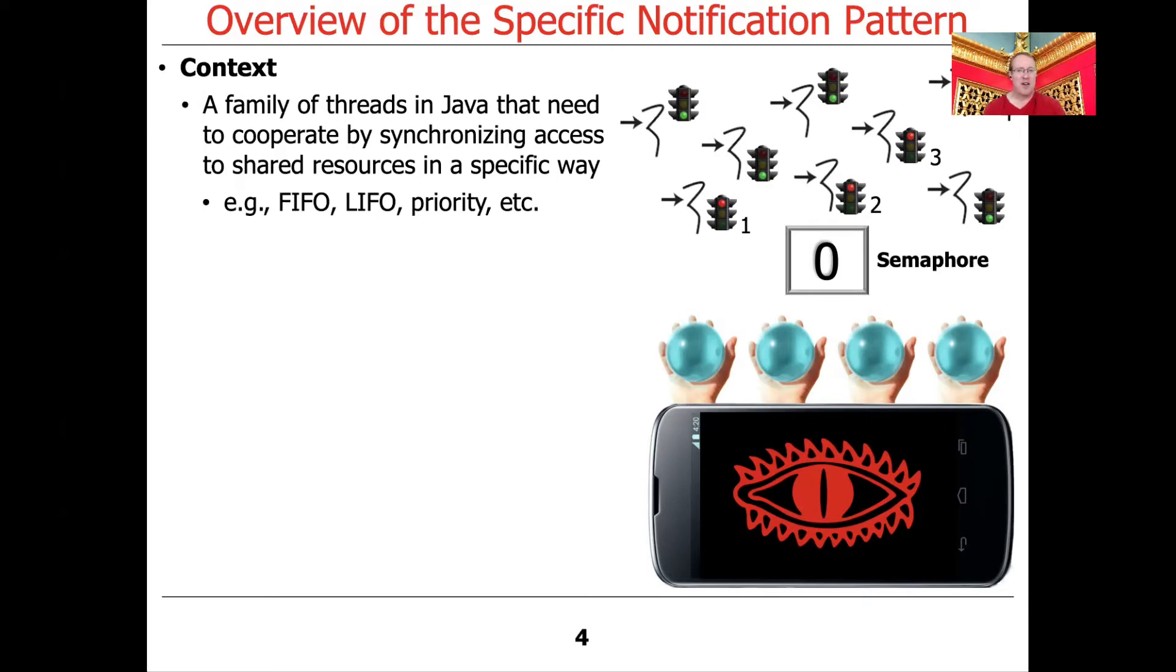For example, if you think about the Palantiri simulator app we've been using as our running example for the assignments in our class, we might, or in fact we do in some cases, want to be able to have FIFO access to the semaphores. In other words, threads that have been waiting the longest are the ones to get the next semaphore.